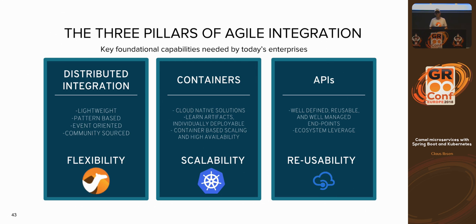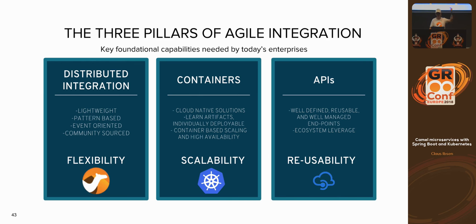When companies go down the avenue of being DevOps and agile and doing integration, we coin that into a concept called agile integration. Agile integration has three key pillars: distributed integration — that's Camel, the bread and butter; a robust, highly available platform to run microservices in a cloud-native way using containers based on Kubernetes; and reusable APIs. That's agile integration — integration, containers, and APIs.